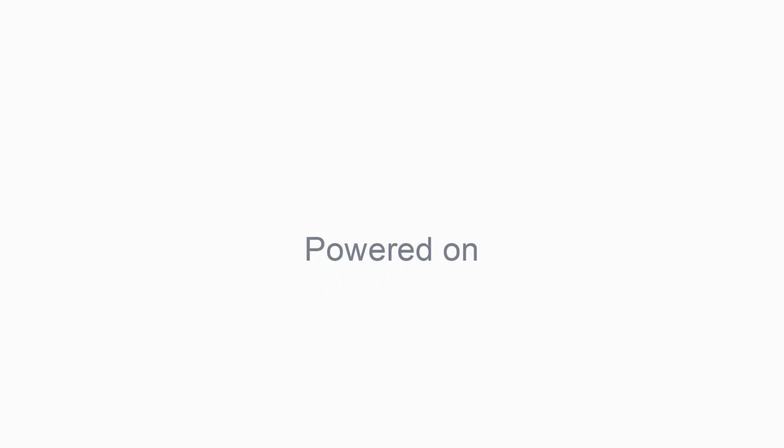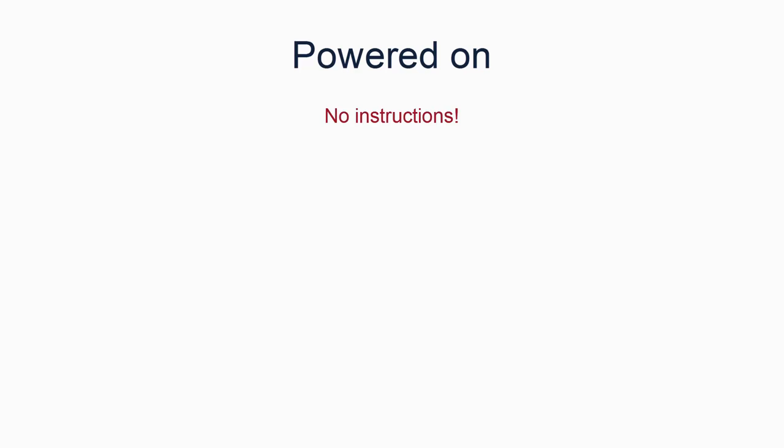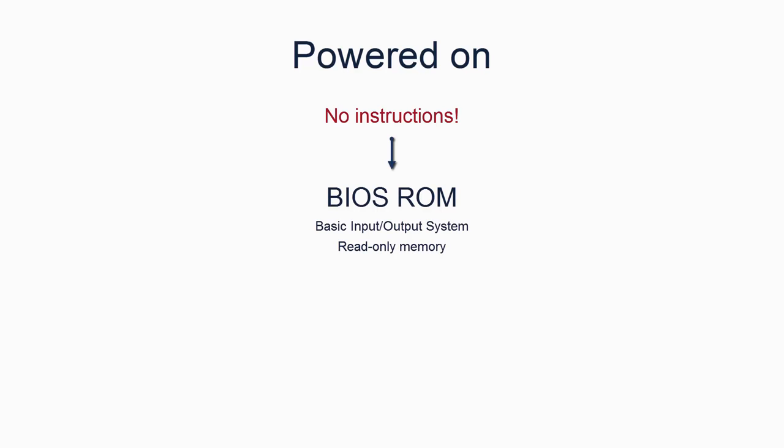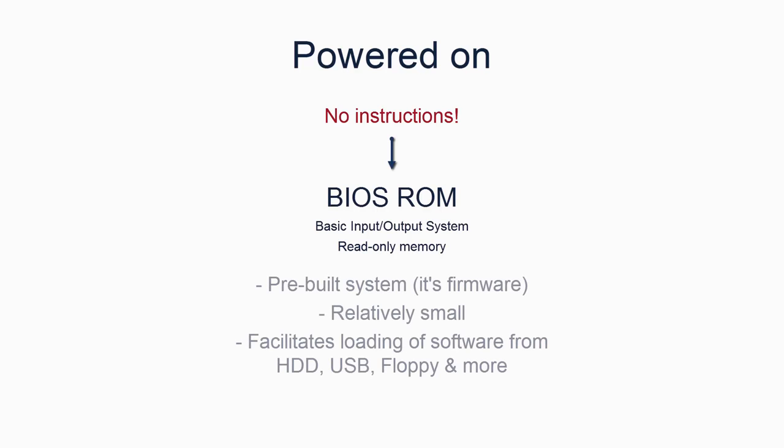Going back to the main discussion, the processor has just powered on. At this point, in PCs, the processor realizes it has no instructions to execute, so loads the instructions from the BIOS ROM. The BIOS is a pre-built system that is relatively small and designed primarily to facilitate loading more machine code from other storage devices. Most commonly, these devices are the hard disk, a CD drive, a USB stick, or from across a network.